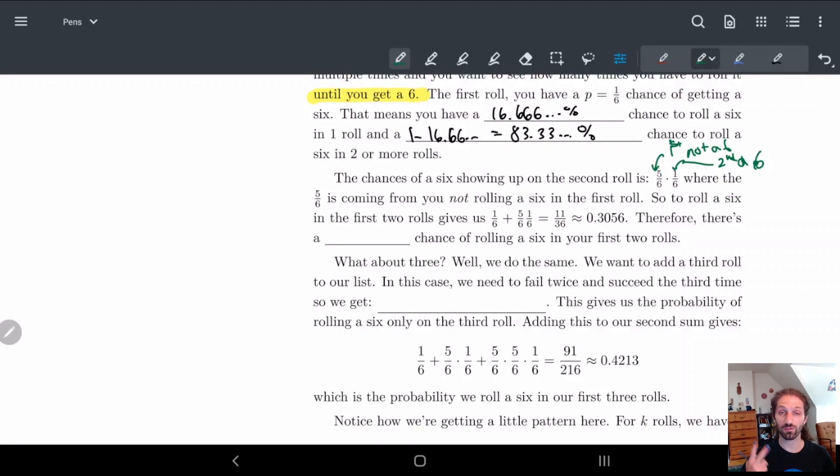So to roll a 6 in the first two rolls, what's the chance of rolling a 6 in the first two rolls? Well, it's the chance of rolling a 6 in the first roll and the chance of rolling a 6 in the second roll, which is roughly 30 and a half percent. So I should write this down, 30.56% roughly.